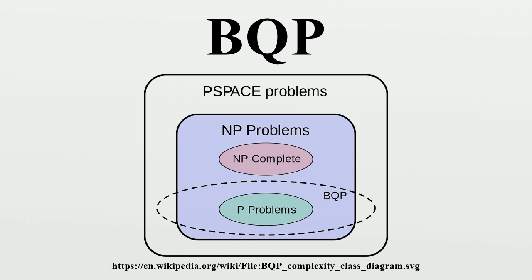The number of qubits in the computer is allowed to be a polynomial function of the instance size. For example, algorithms are known for factoring an n-bit integer using just over 2n qubits. Usually, computation on a quantum computer ends with a measurement, which leads to a collapse of the quantum state to one of the basis states. It can be said that the quantum state is measured to be in the correct state with high probability.